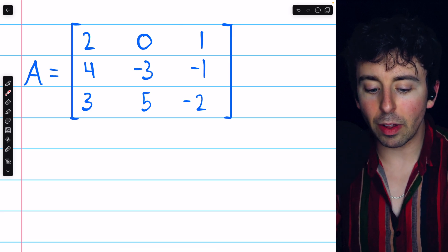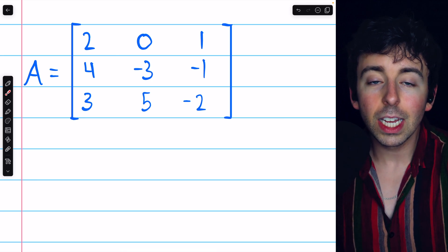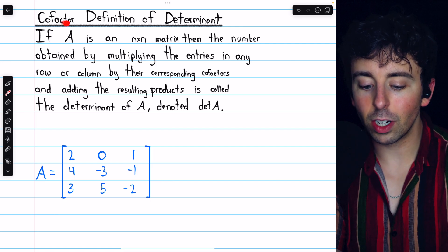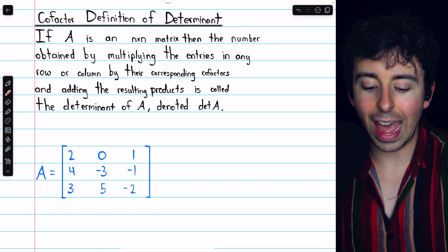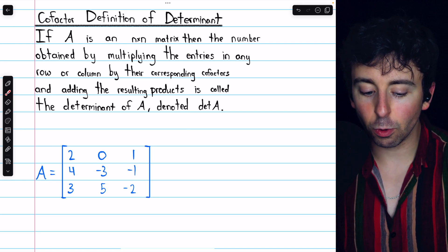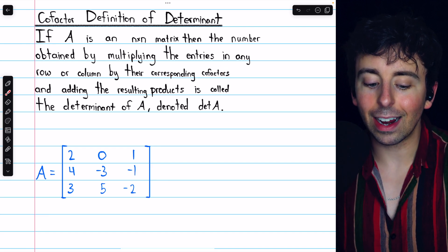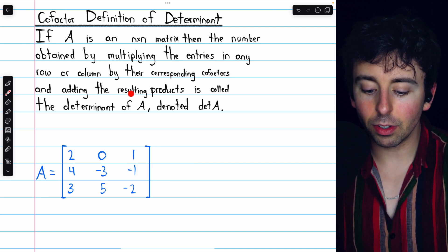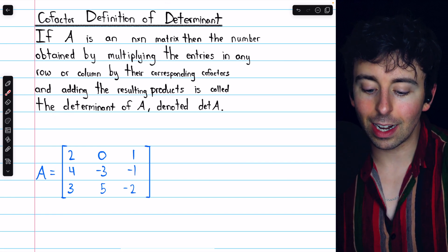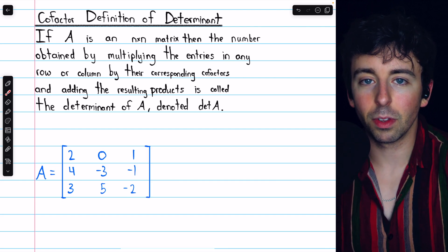We're going to begin by finding the determinant using the cofactor definition of the determinant. I'll leave a link in the description to my lesson going over this definition. Here that definition is for your reference: if A is an n by n matrix, then the number obtained by multiplying the entries in any row or column by their corresponding cofactors and adding the resulting products is the determinant. This doesn't mean anything if you don't know what a cofactor is, but you'll kind of see as we go through this example.